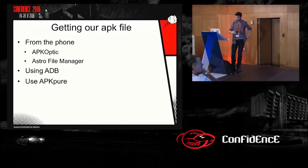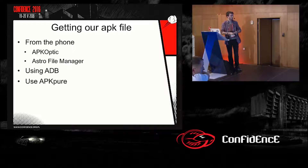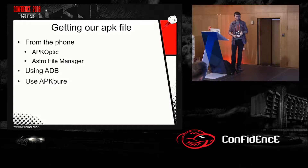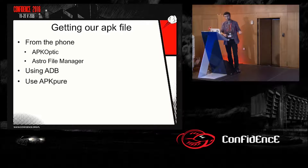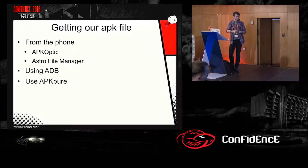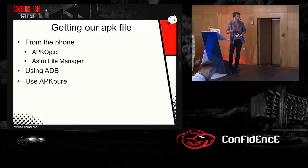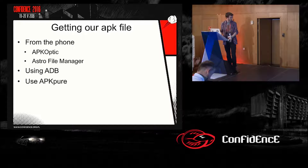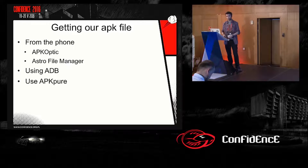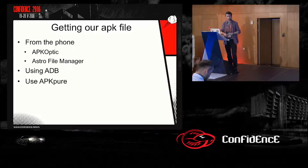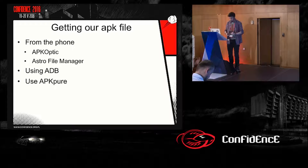To start the reverse engineering process, we need to get the APK. If we have an Android device, we can install tools like APKoptic and the Astro File Manager, which will generate a backup of the application on your device, and then you can work with the compiled or disassembled version. Also, we can use the Android Debug Bridge to pull the APK from the device. And if we don't have any device and are using an emulator for testing, we can use a website called APKpure. We copy the URL of the application from the Google Play page, paste it on APKpure, and automatically we will have our application ready to start reverse engineering.